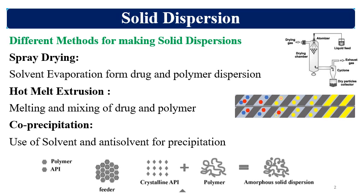Different techniques for making solid dispersions include spray-drying, hot melt extrusion, and co-precipitation. Sometimes other techniques can also be used, but mainly spray-drying and HME are commercially viable and generally utilized for pharmaceutical formulations. Spray-drying involves solvent evaporation from a drug and polymer dispersion, which is dried using a spray dryer, and the resulting material is called a solid dispersion.